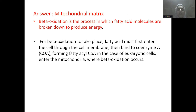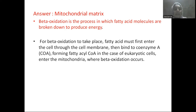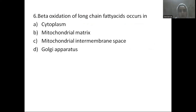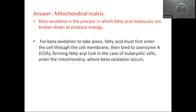Fatty acids in the cell first bind with CoA, forming fatty acyl-CoA. The inner mitochondrial membrane is impermeable, so the fatty acid-CoA complex must be transported across it. Inside the mitochondrial matrix, beta oxidation of long-chain fatty acids takes place. So the answer is the mitochondrial matrix in eukaryotes.